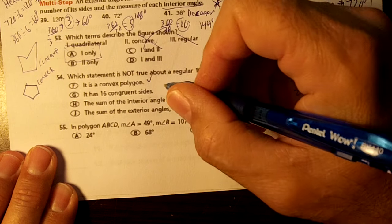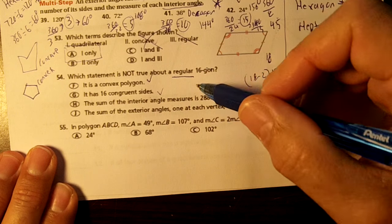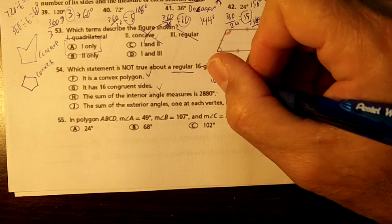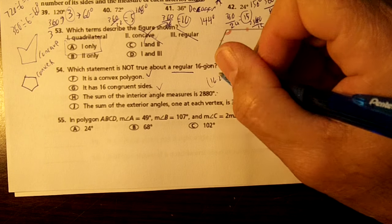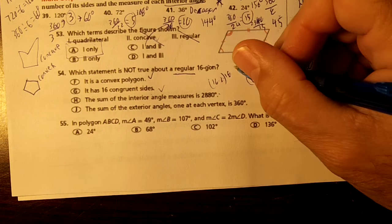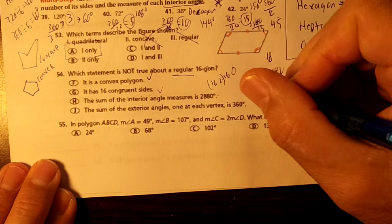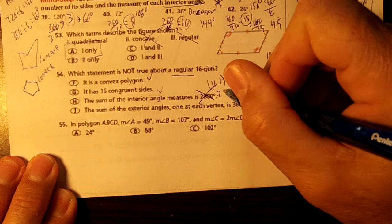It has 16 congruent sides, correct, because it's regular. The sum of the interior angles, this is going to be 16 minus 2 times 180. So you're just going to do 14 times 180. That's 2520. That's not correct. It's 2520.